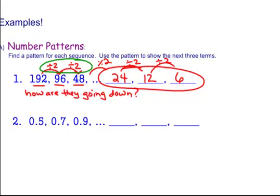What I want you guys to do right now is write down these three numbers: 0.5, 0.7, 0.9. And I want you right now to see if you can come up with a pattern to get the next three numbers. Have you found it?